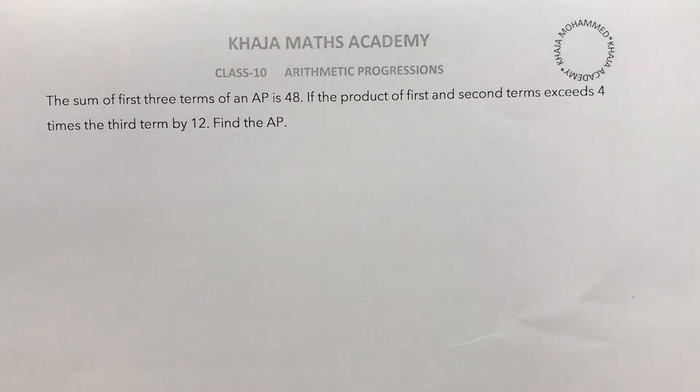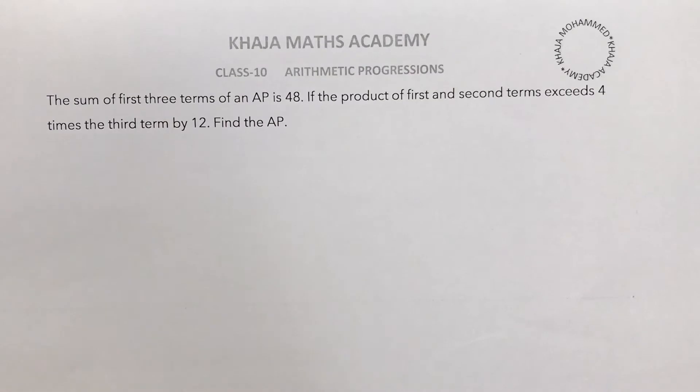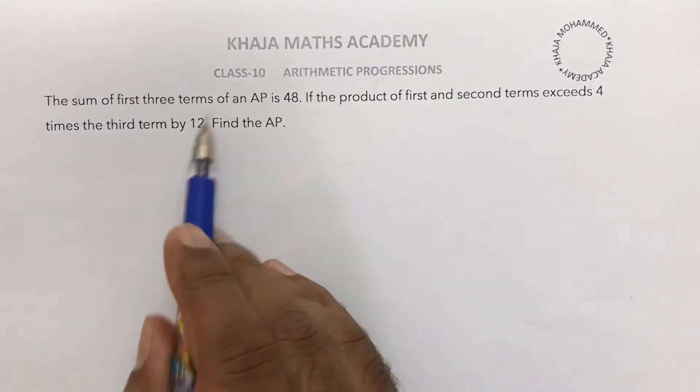The sum of first three terms of an AP is 48. If the product of the first and second terms exceeds 4 times the third term by 12. In an AP, if the problem is based on three terms...